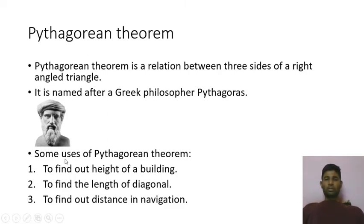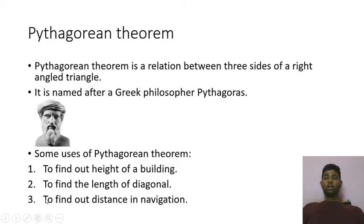These are some uses of the Pythagorean theorem. You can use it to find out the height of buildings, the length of the diagonal of a rectangle or a square, and the distance between two places in navigation.